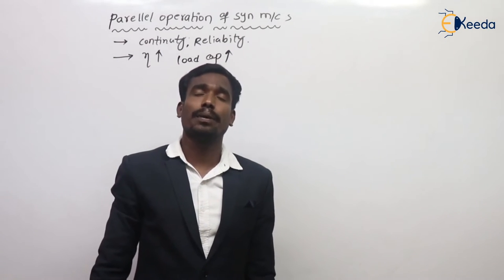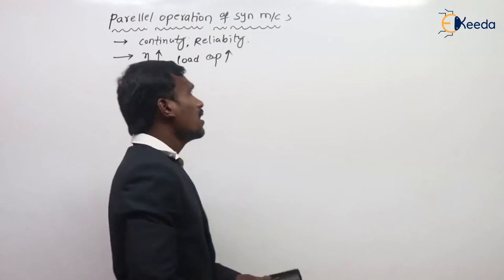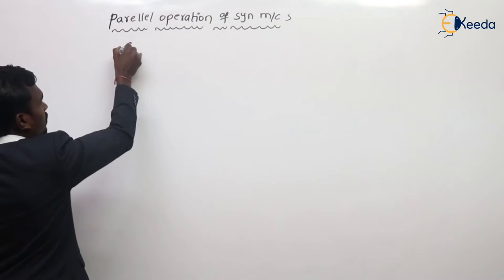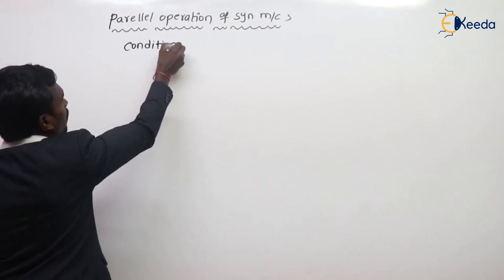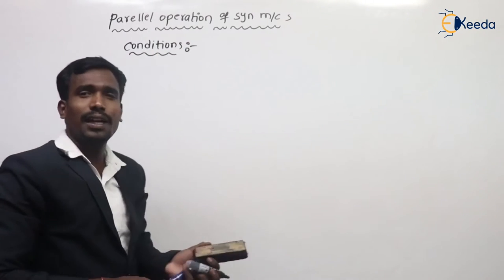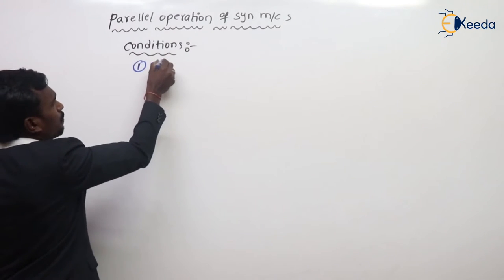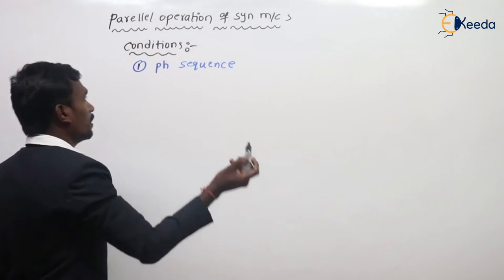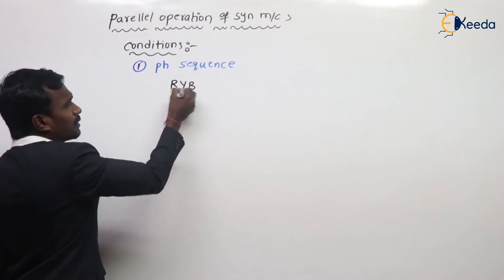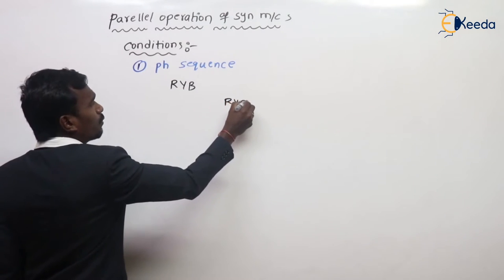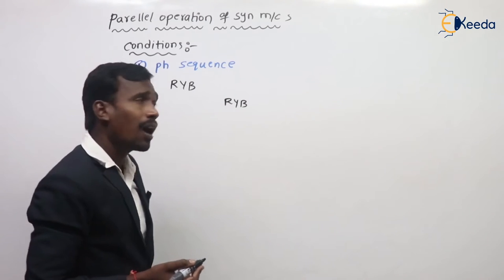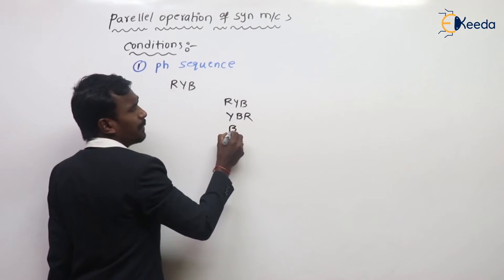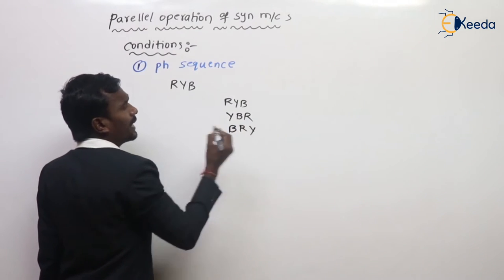Now, what are the conditions for parallel operation of synchronous machines? The first condition is that phase sequence should be same. For example, if one machine's phase sequence is RYB, then the next machine's phase sequence should also be RYB.